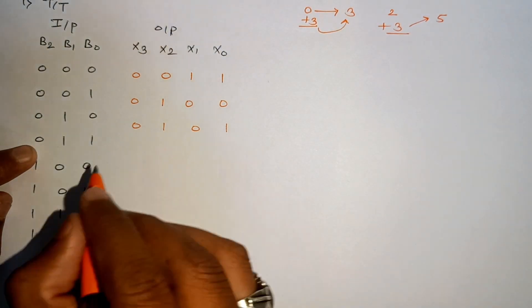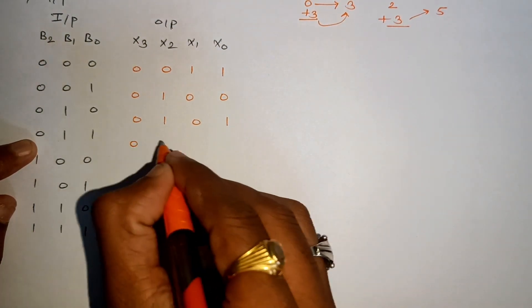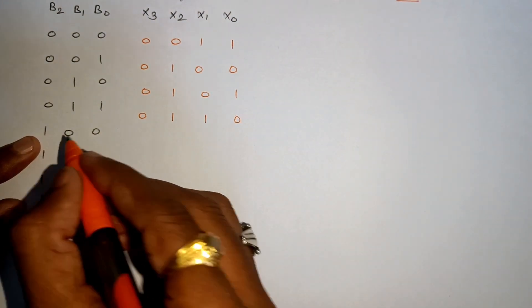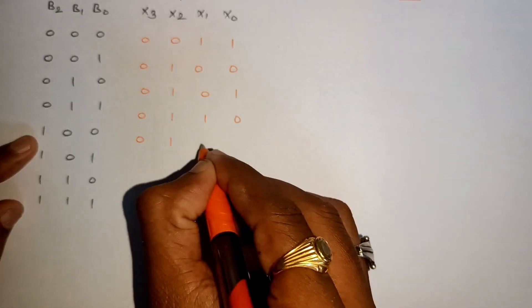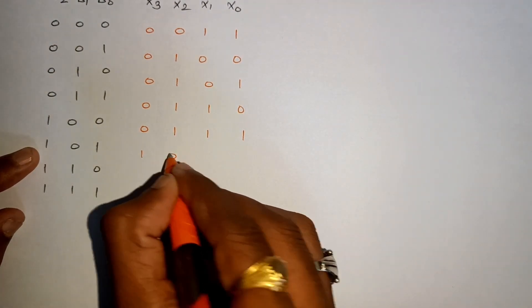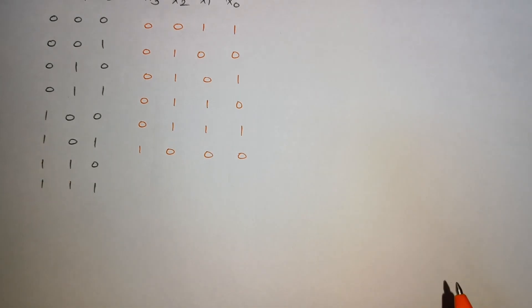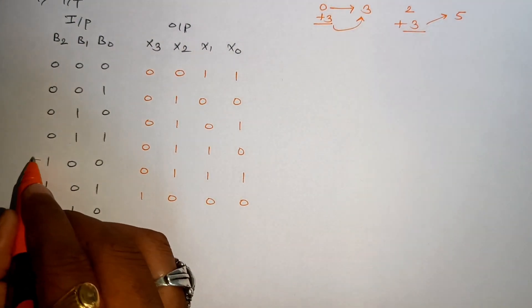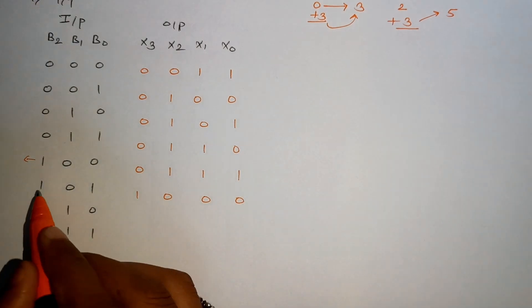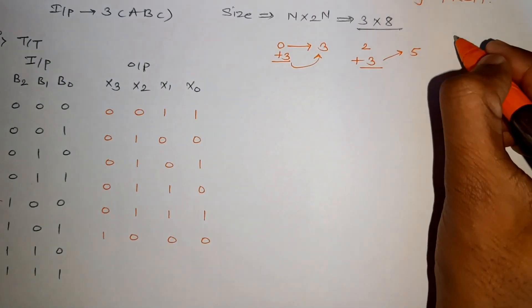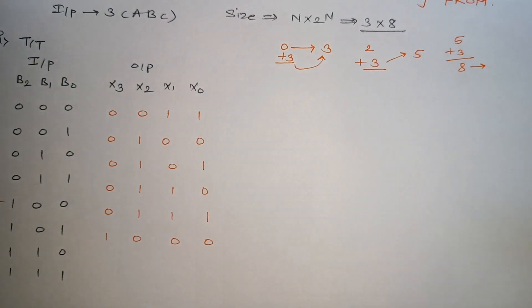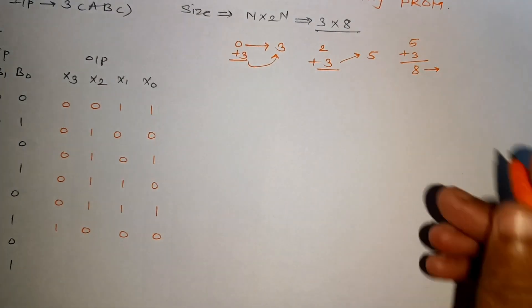3 plus 3 will be 6, 0, 1, 1, 0. Then we have 4, so 4 plus 3 will be 7. We will be getting 0, 1, 1, 1. Then we have 5 plus 3 equals 8, which is 1, 0, 0, 0.